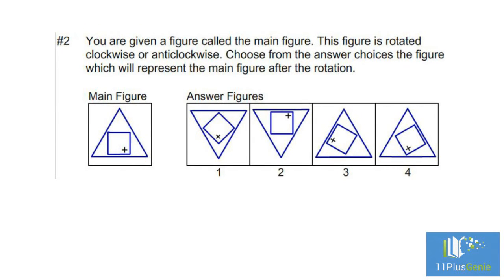Example two: you are given a figure called the main figure. This figure is rotated clockwise or anti-clockwise — choose from the answer choices the figure which will represent the main figure after the rotation. We can see in the main figure that one side of the triangle and one side of the square must be parallel to each other. In figure one this is not the case, so we can eliminate figure one.